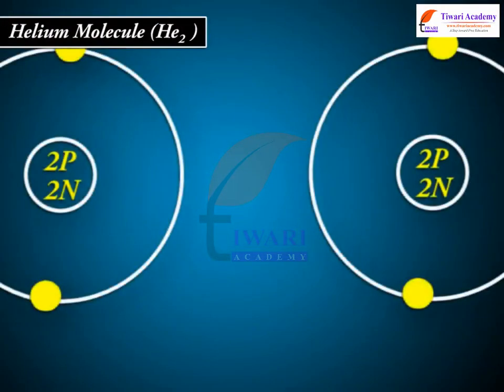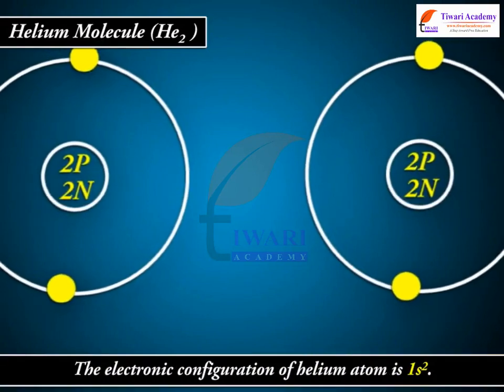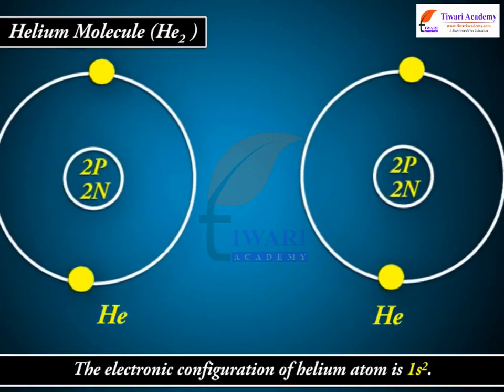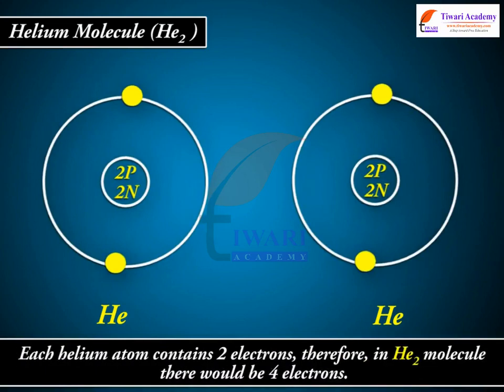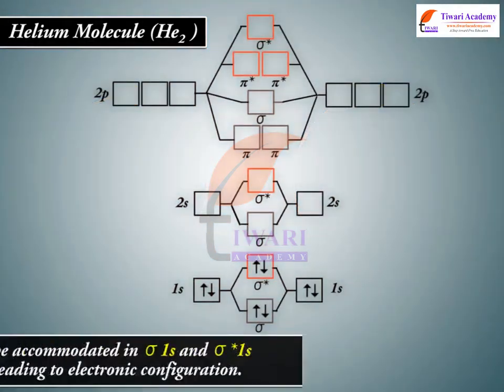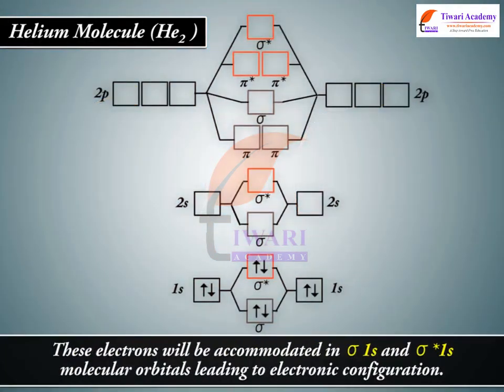1. Helium molecule He2. The electronic configuration of helium atom is 1s2. Each helium atom contains 2 electrons. Therefore, in He2 molecule, there would be 4 electrons. These electrons will be accommodated in sigma 1s and sigma asterisk 1s molecular orbitals, leading to electronic configuration.